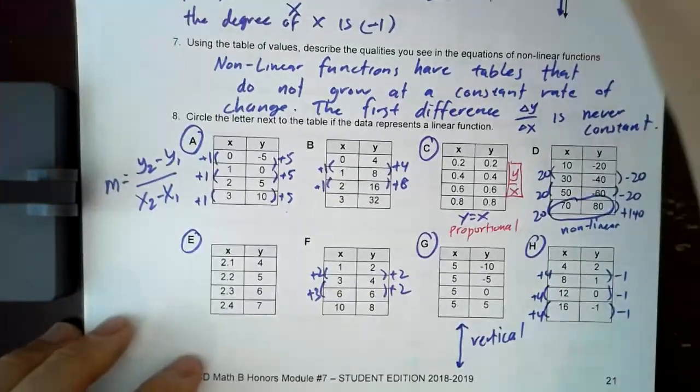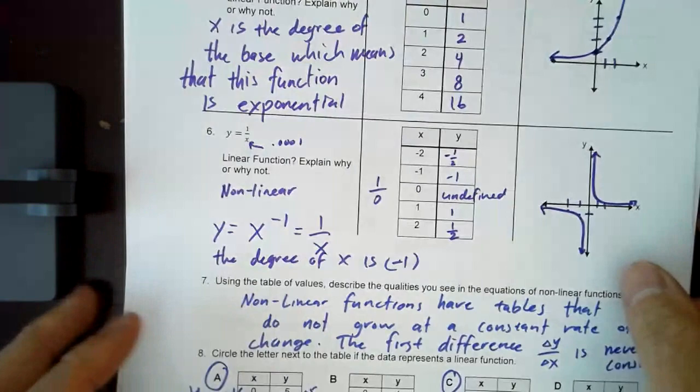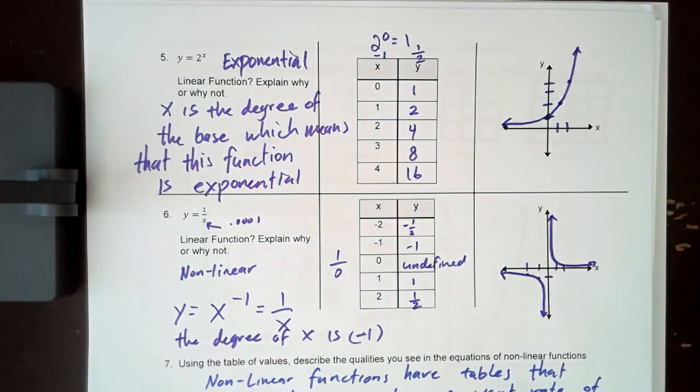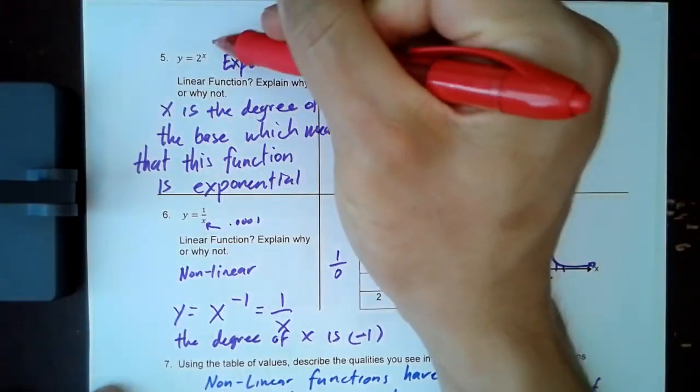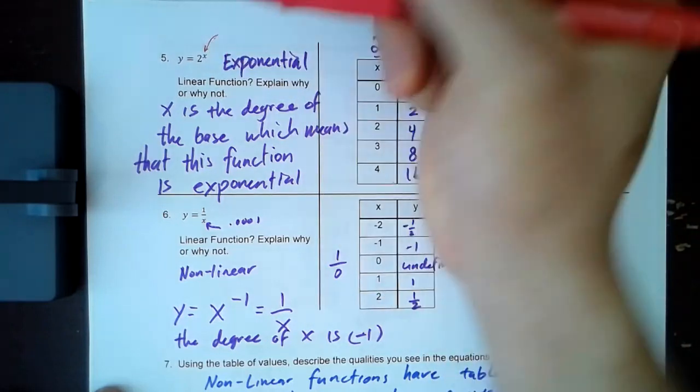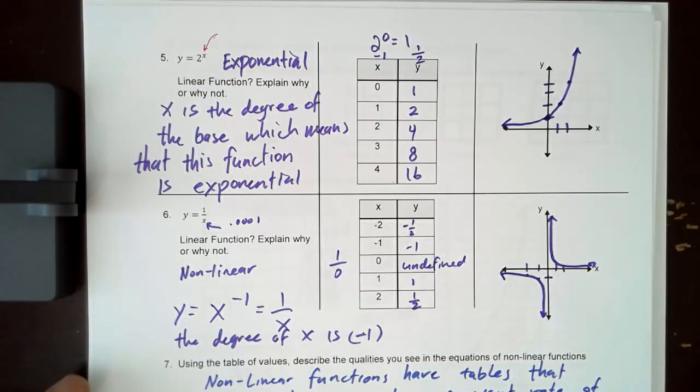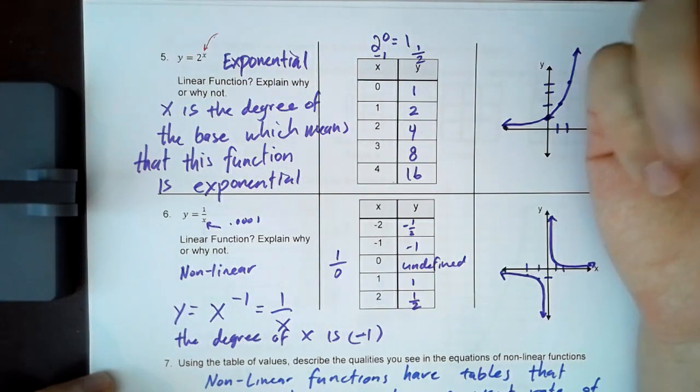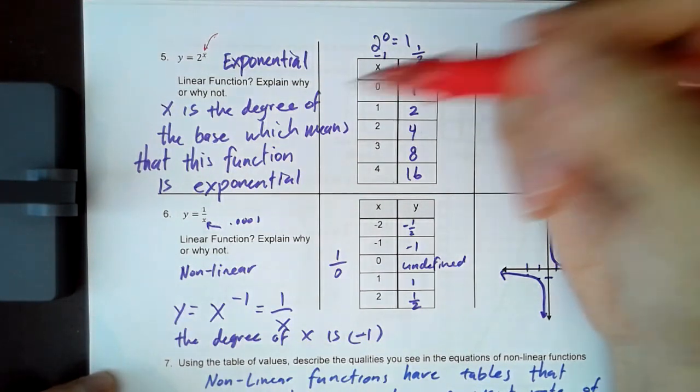We dive into other examples. So something like number five, y equals two to the x. Well, that's what we call exponential, right? Exponential is when you have the variable in the exponent. So you can already know that that can't be linear. We know linear growth is when you have the same amount every time, the change in y. Whereas exponential, it's not even a sum or difference that's the change. Exponential is a certain percent or a certain percentage of change.